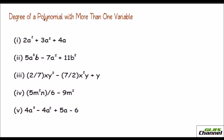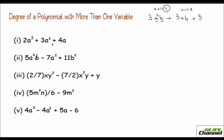When a polynomial has more than one variable, you find the degree by adding up the exponents of the variables in each term. For instance, in 3a squared b, the exponents are 2 plus 1, giving a degree of 3. For the polynomial 2a cubed plus 3a squared plus 4a with one variable, the degree is simply the highest exponent, which is 3.